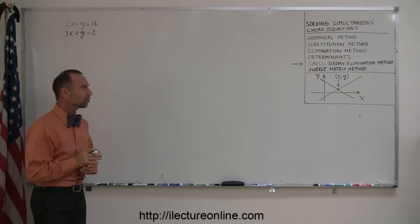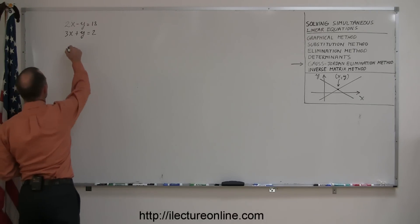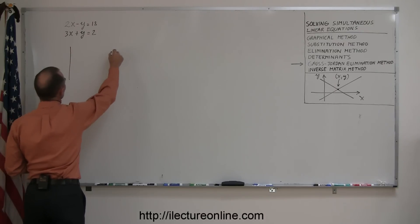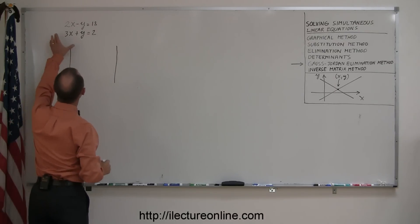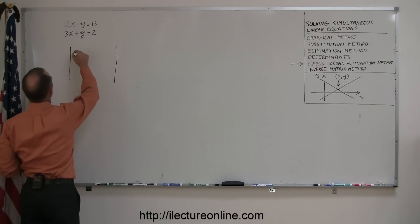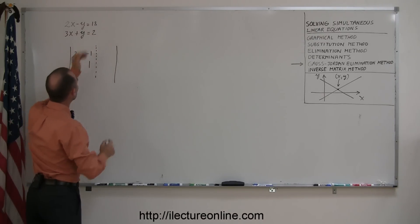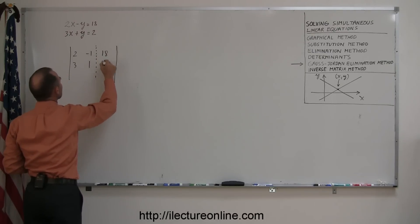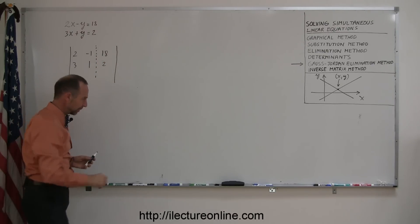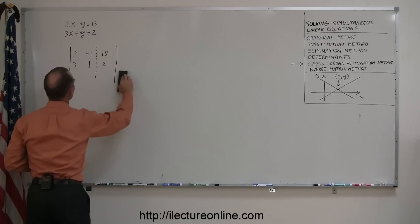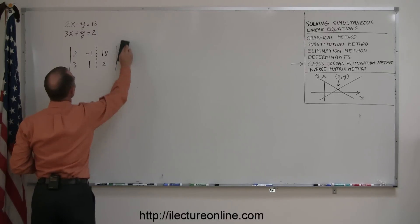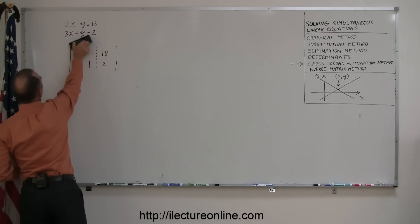So the way the Gauss-Jordan elimination method works is you draw something that looks kind of like a determinant. You place within these 2 lines the coefficients on the x and the y variables. So we have a 2, a minus 1, a 3, and a 1. And then you draw a dashed line here, and to the right of the dashed line, you put in the constants 18 and 2. And I probably got a little bit carried away, made it a lot bigger than it needed to be, so let me make it a little bit smaller.